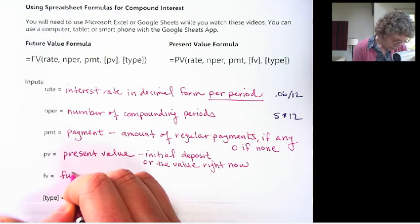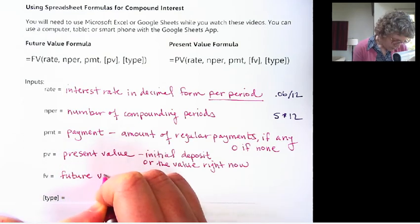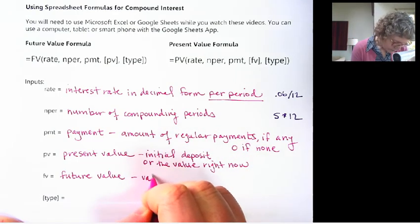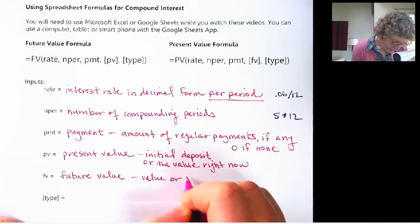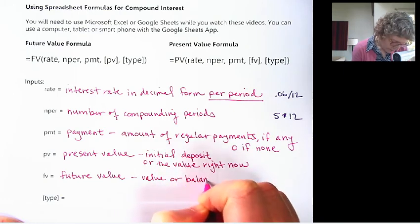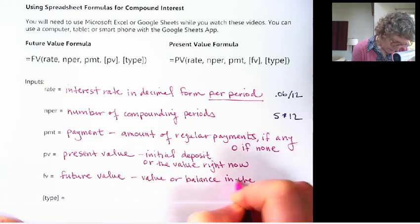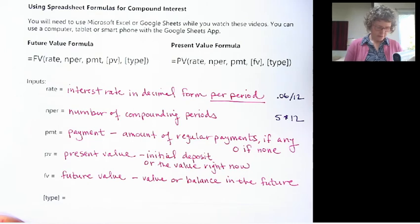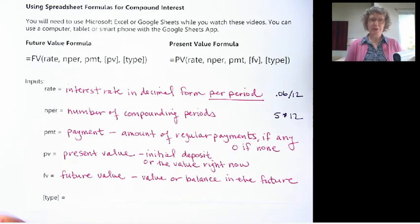FV is the future value. That is the value out then. So it could be how much money am I going to have at the end. Value or balance in the future. So this is what you want to have at the end. Whatever your time period is. If it's a loan, you want it to be zero at the end. So whatever the value or balance is in the future.